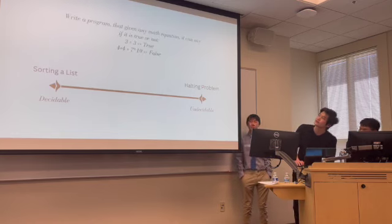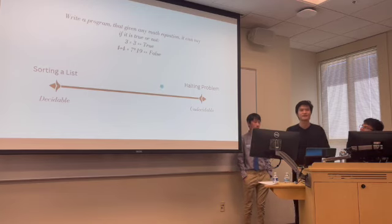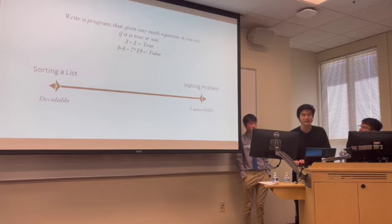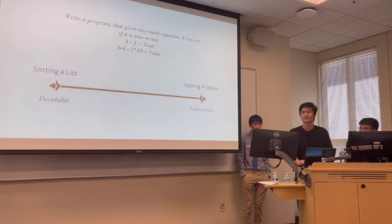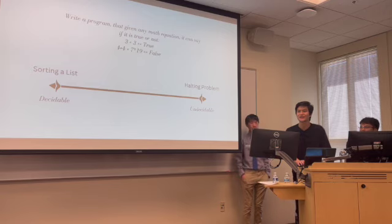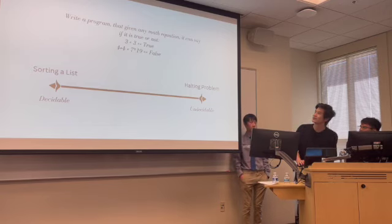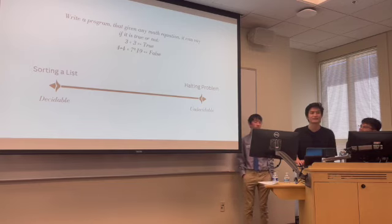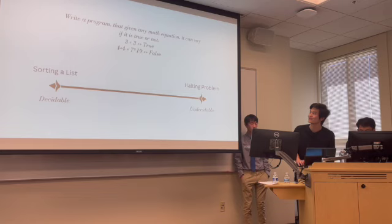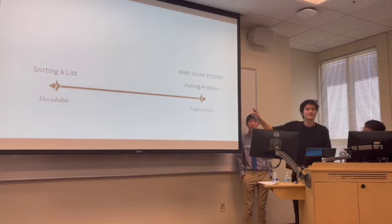Here's another famous problem: write a program that, given any math equation, can say whether it's true or not. For example, 3 equals 3 is true, but 4 plus 4 equals 7 times 19 is false. Is this decidable or undecidable? It's not solvable — because if it were solvable, mathematicians would not have a job anymore. The math solving problem is undecidable. Theoretical computer scientists spend their entire lives mapping out these types of questions.